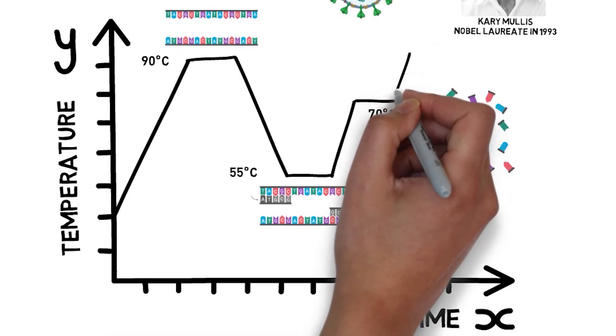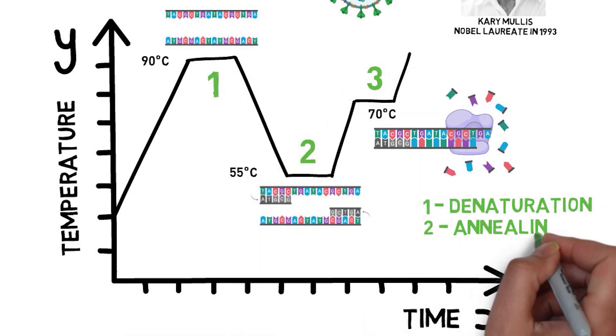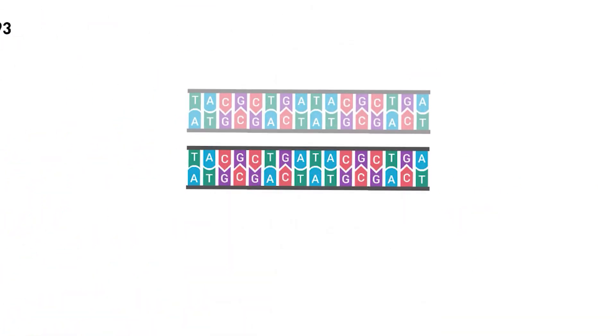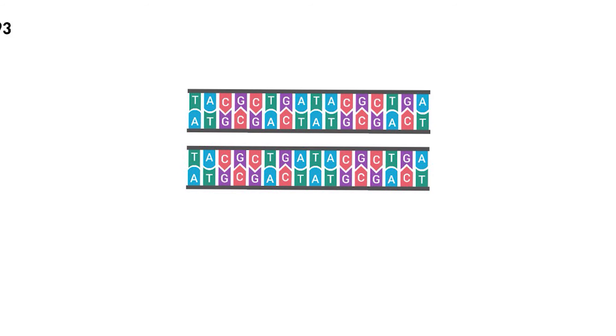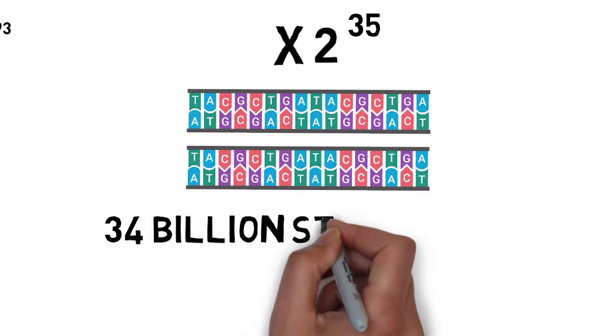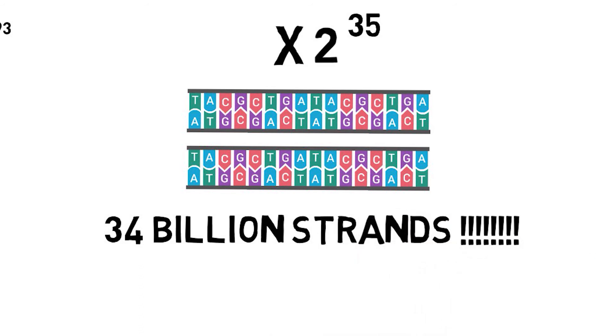The thermocycler heats and cools the reaction down for many cycles, alternating these three steps called denaturation, annealing and elongation. After each cycle, the quantity of our specific segment is doubled, so after about 35 cycles we would have 2 to the power of 35 strands, which is equal to 34 billion strands.